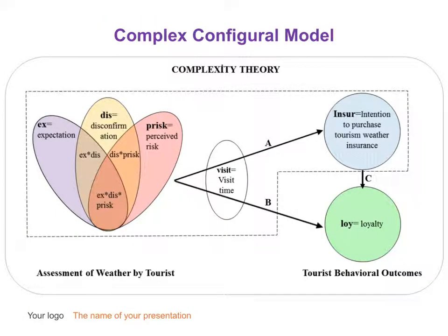This is the proposed complex configural model. A Venn diagram is used to demonstrate combinations of the antecedent conditions for predicting two outcome conditions. Arrow A indicates the causal algorithms for predicting intention to purchase tourism weather insurance. Arrow B represents recipes for simulating a higher score of loyalty. In Arrow C, intention to purchase tourism weather insurance is added to the model as a causal ingredient for predicting loyalty.